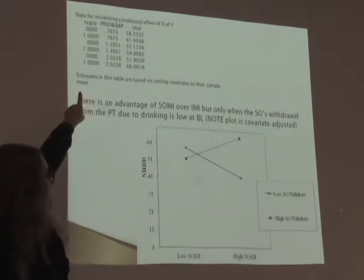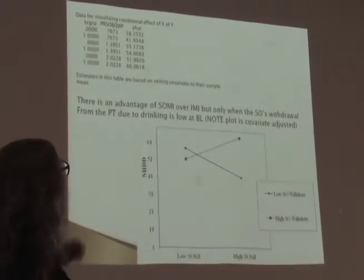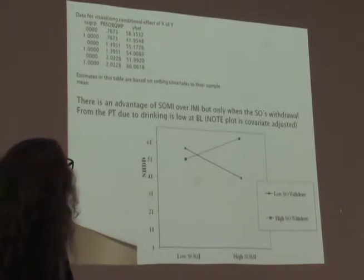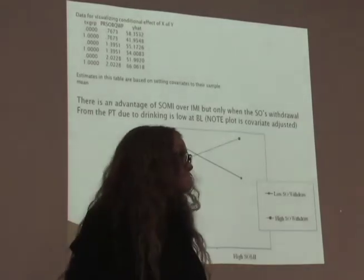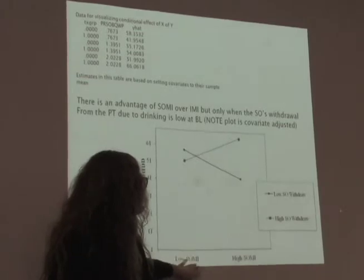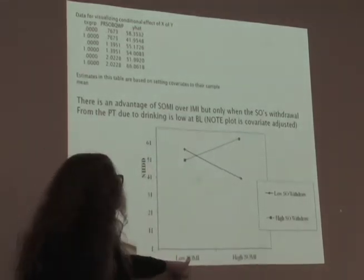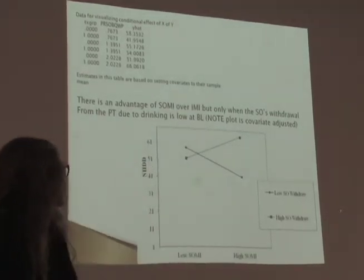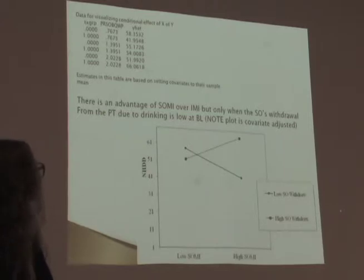The plot data and Excel visualization confirm the bottom line: there is an advantage of SOMI over IMI, but only when the SO's withdrawal from the patient due to their drinking is low at baseline — only when they're not engaging in a lot of this behavior. A clarification: the legend labels 'low SOMI' and 'high' refer to IMI (=0) and SOMI (=1) — it's dichotomous treatment, likely just a labeling issue in the output.